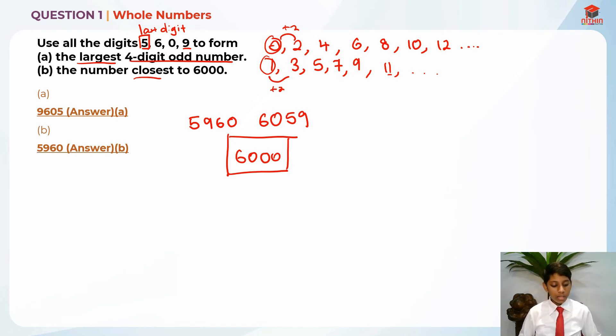5, 9, 6, 0. So 6,000 minus 5, 9, 6, 0, we get 40. And then 6, 0, 5, 9 minus 6,000. And 6, 0, 5, 9 is already bigger than 6,000, so we have to minus 6,000. So we get 59. So is 59 bigger or 40 bigger? 59 is greater than 40 and 40 is lesser than 59. And thus, 5, 9, 6, 0 is the closest number to 6,000 because 40 is a smaller number and thus is more closer to 6,000. That's why 5, 9, 6, 0 is the answer.